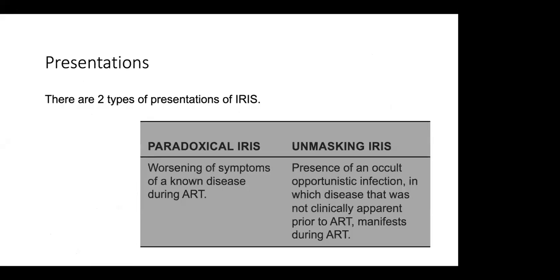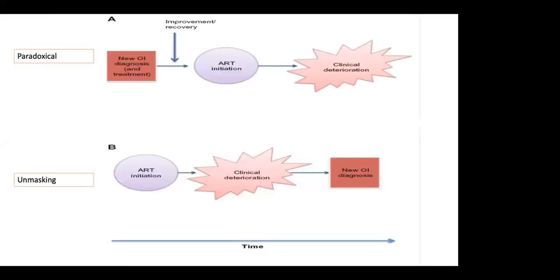IRIS can have two presentations. It can be paradoxical IRIS, which means the worsening of symptoms of an already known disease, or unmasking, which means the patient had an illness that was unknown, but when they started ARTs, they start having these symptoms. With paradoxical IRIS, there is a new or already known diagnosis, treatment is started, and there's a clinical deterioration. With unmasking IRIS, the patient is not known to have any other illness besides being ARV-reactive, ART is initiated, there is clinical deterioration, and then symptoms appear that allow us to diagnose the opportunistic infection.